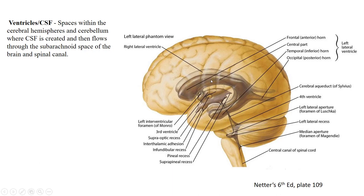The lateral ventricles are shaped basically like a C with a little tail sticking out the back — one on either side, one in each cerebral hemisphere. If you made the letter C with each hand, faced them toward one another with the opening of the C forward, touched your index fingers together, and slightly separated your thumbs, that would be roughly the shape of the lateral ventricles. The tips of your fingers represent the frontal or anterior horns, your thumbs the temporal horns, and your arms the long occipital or posterior horns.